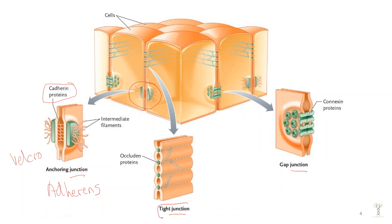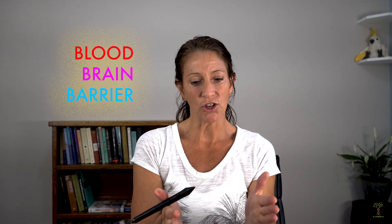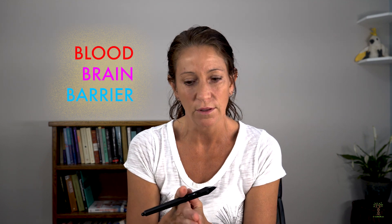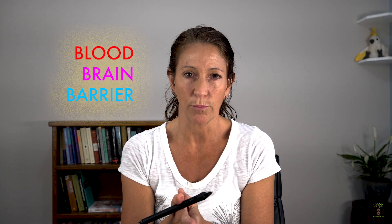Tight junctions are composed primarily of proteins called occludins, and their main role is to form a barrier. A good example is the blood-brain barrier. In your brain you have neurons, glial cells, and blood vessels, but you don't want substances from the blood vessels getting into where the neurons are — that environment has to be tightly regulated. The tight junctions between the endothelial cells of the blood vessel and the surrounding tissue form the blood-brain barrier.